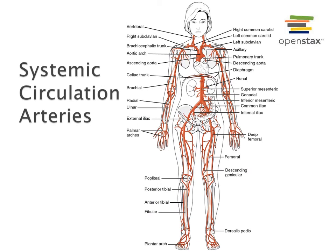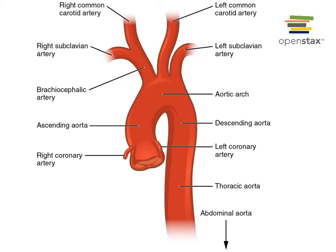The systemic circulation includes the arteries that carry blood with a high oxygen concentration away from the left ventricle of the heart. The aorta begins as the ascending aorta, carrying blood superiorly out from the left ventricle through the aortic semilunar valve. The first branches coming off the ascending aorta are the coronary arteries. When the ascending aorta curves, its name changes to the aortic arch.